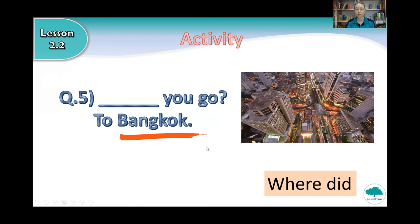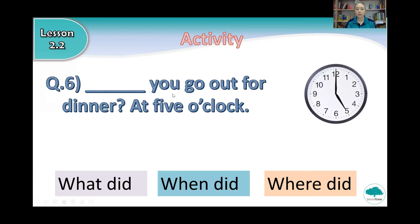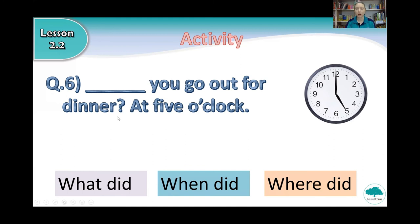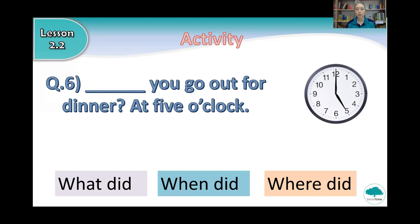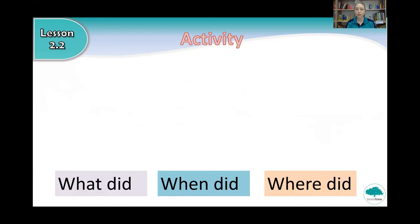Very good. Next question: something you go out for dinner — at five o'clock. So five o'clock is a time. Do we say what did, when did, or where did when we talk about a time? Very good.